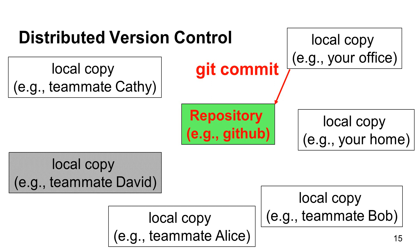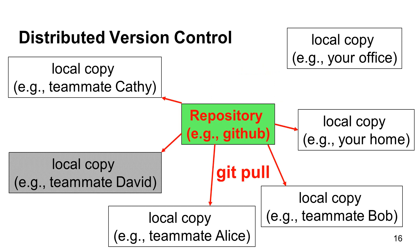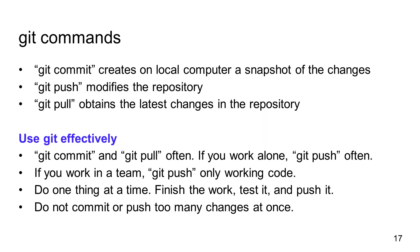You decide that your changes are ready for others to see. Thus, you do git push. The repository is changed. Next, others can do git pull and obtain the changes you have pushed. For David, the changes from you are merged with the changes David has made earlier. Please notice that the local copy at your home computer now has the changes you have made in your office computer.